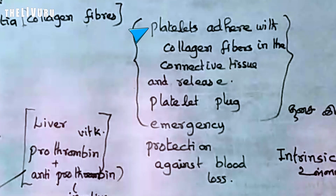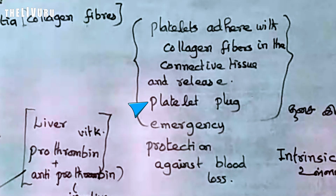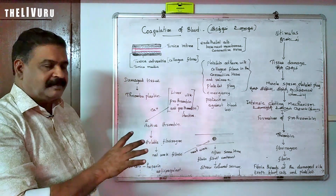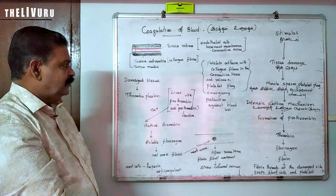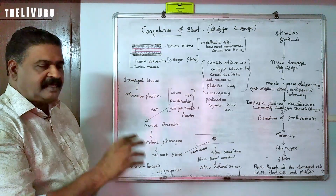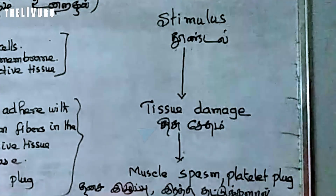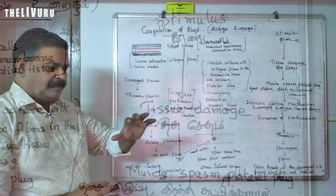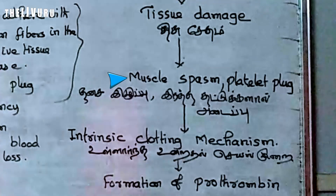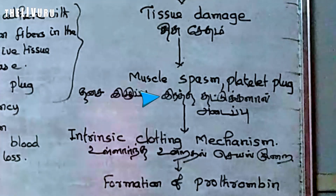Platelets interact with collagen fibers in the connective tissue and release a platelet plug. This platelet plug provides emergency temporary protection. It is followed by a more permanent solution involving muscular spasms and further clotting mechanisms.